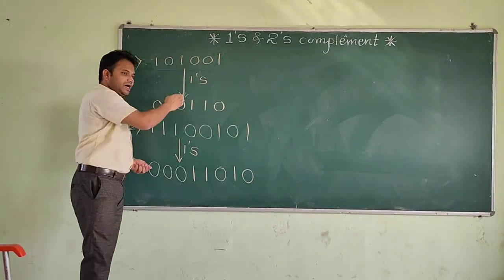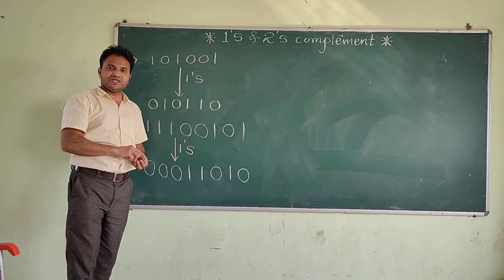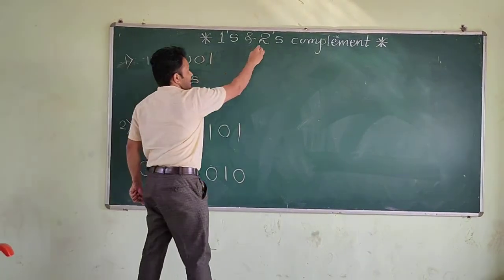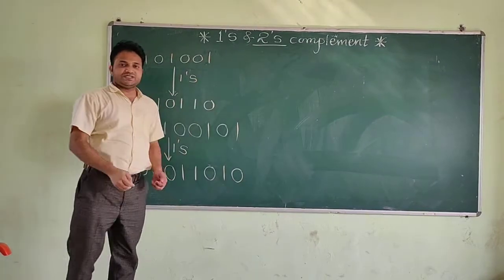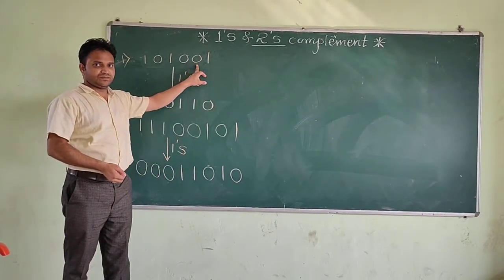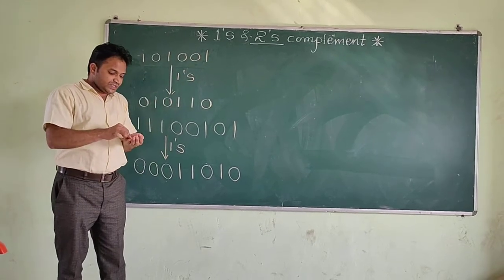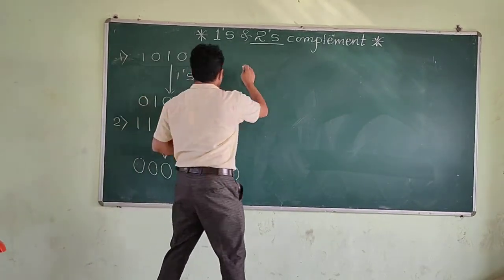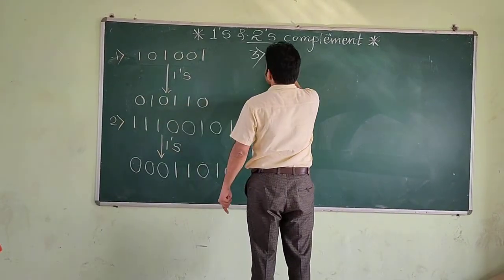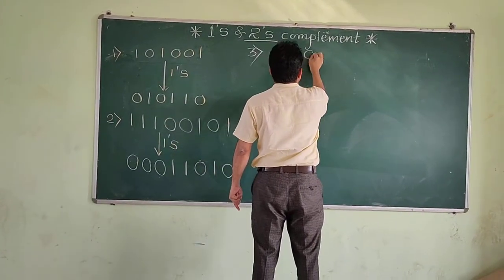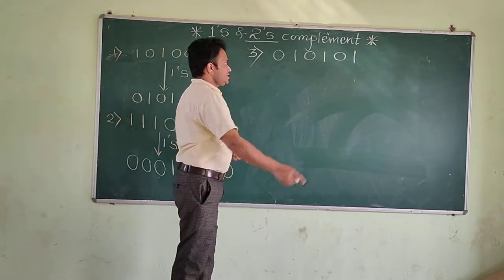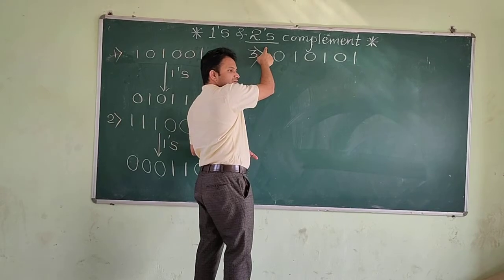If you understand how to find the 1s complement, then it is very easy to find the 2s complement also. In the next session, it is asked to find the 2s complement. Take another example: 010101. This is the given number, and you have to find the 2s complement of this number.